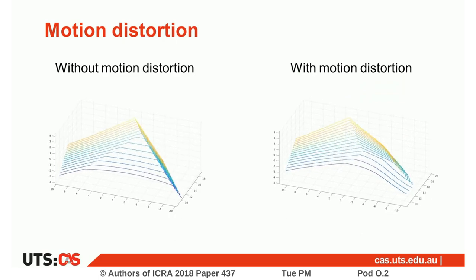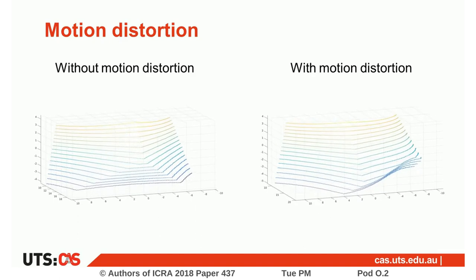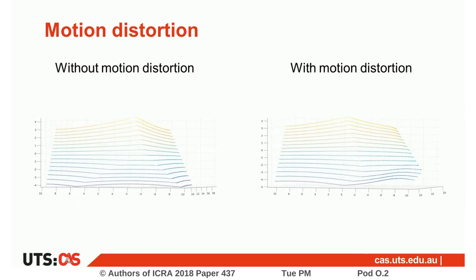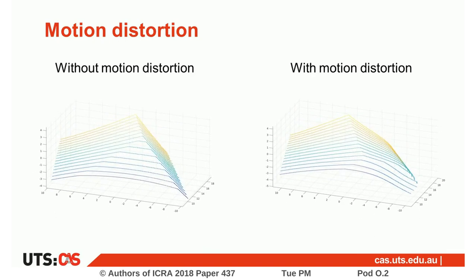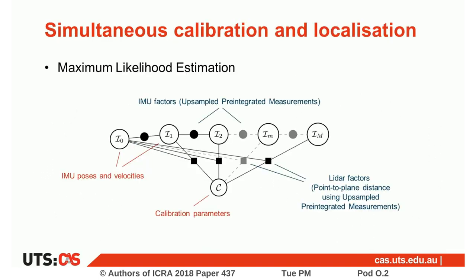The IMU gives information on the system dynamics and the LiDAR provides geometric scans of the environment. With commonly made assumptions, the LiDAR scans are subject to motion distortion. To estimate the relative transformation between the sensors, we formulated the problem as maximum likelihood estimation. We estimate both the IMU trajectory and the calibration parameters based on point-to-plane distances and IMU pre-integration.